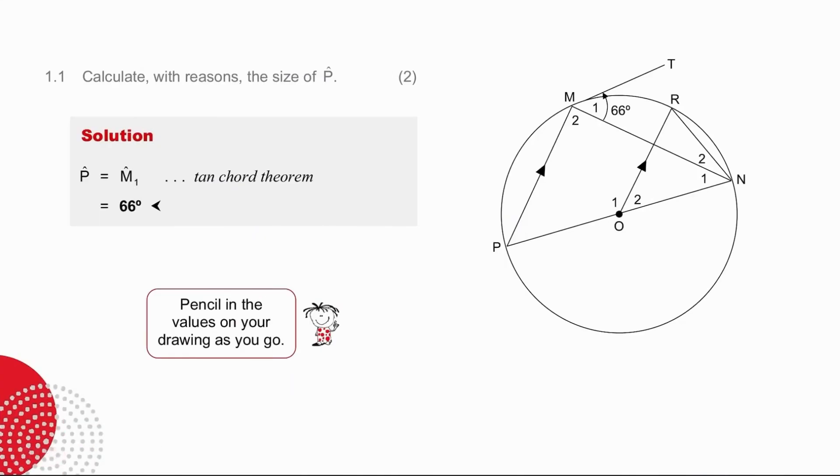It's very easy to write that up. You simply say angle P is 66 degrees, and the statement is short and sweet. Tan chord theorem.